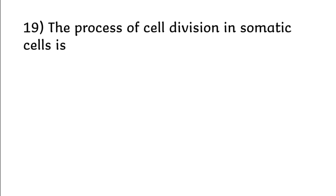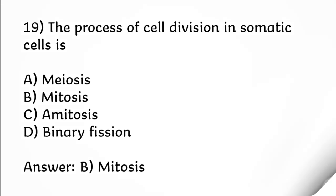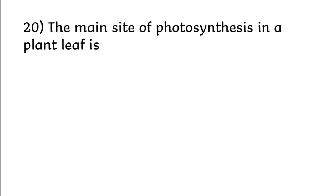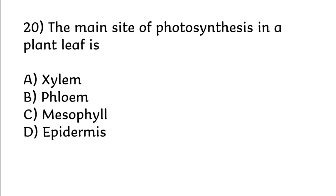The process of cell division in somatic cells is: meiosis, mitosis, amitosis, binary fission. Correct answer is option B: mitosis. The main site of photosynthesis in a plant leaf is: xylem, phloem, mesophyll, epidermis.